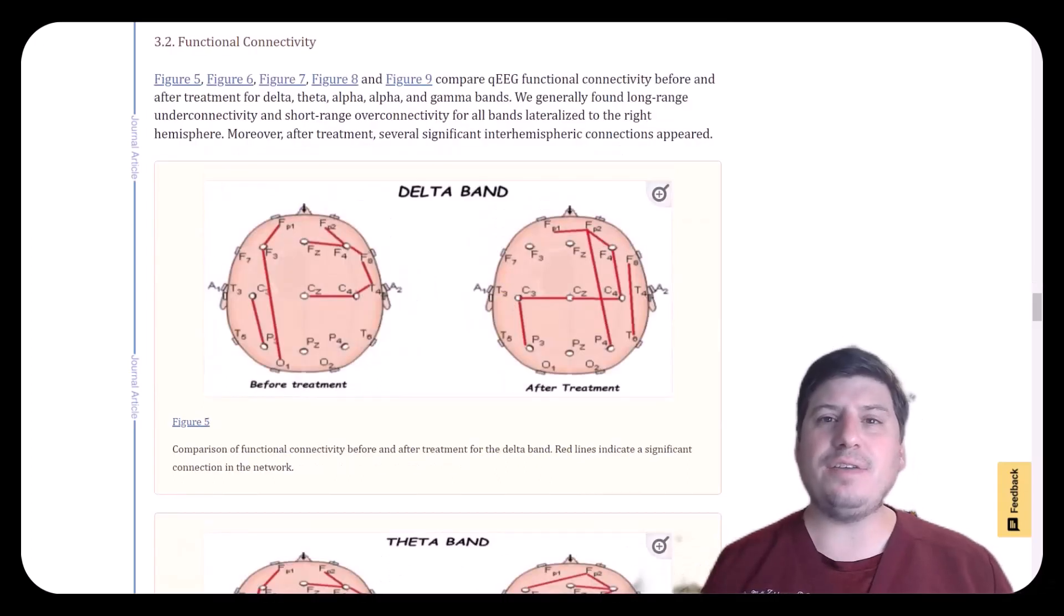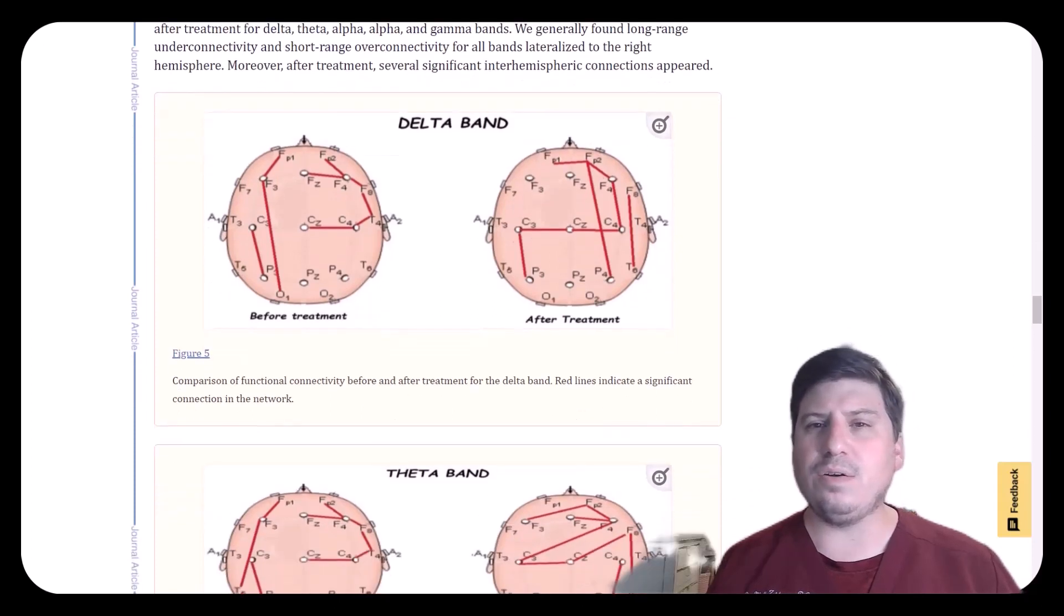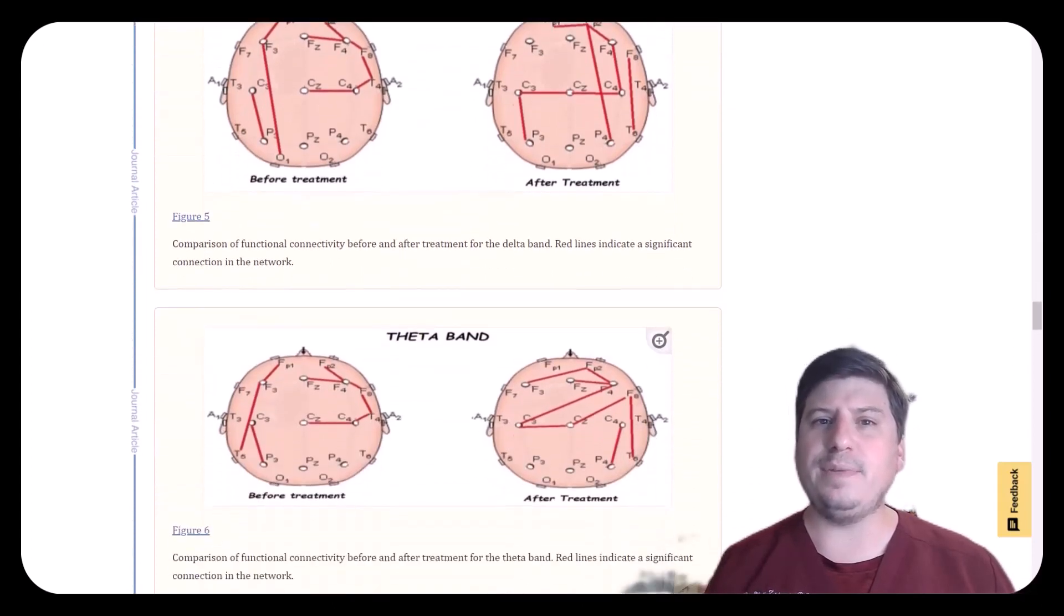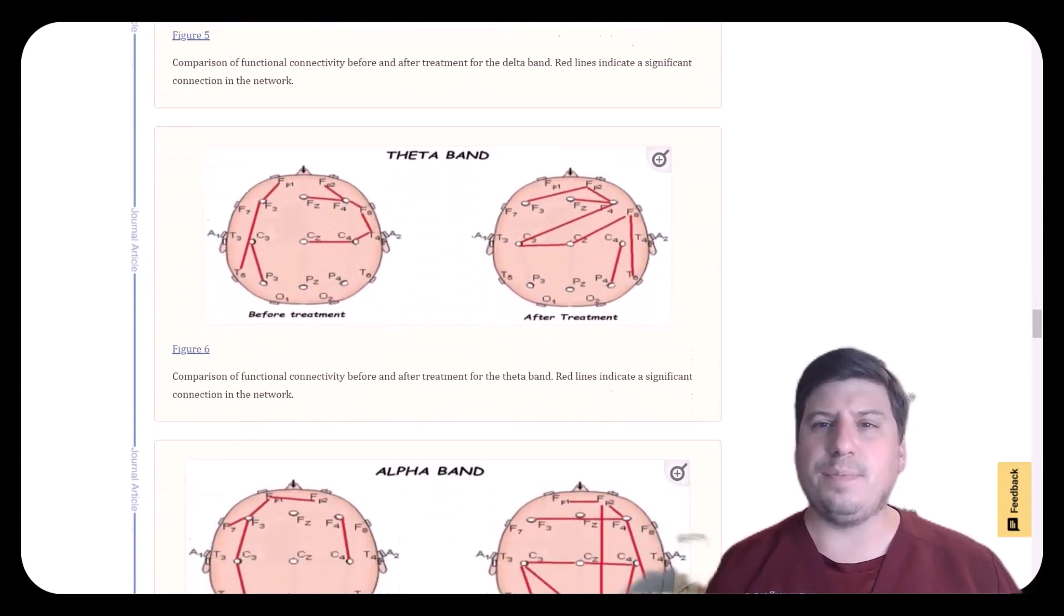And lastly, let's look at functional connectivity. One of the things that we know about autism is that there is a decrease in connectivity between the hemispheres, and the brain is functioning with more short-range isolated connections instead of long-range connections between the hemispheres that we see in neurotypical connectivity.